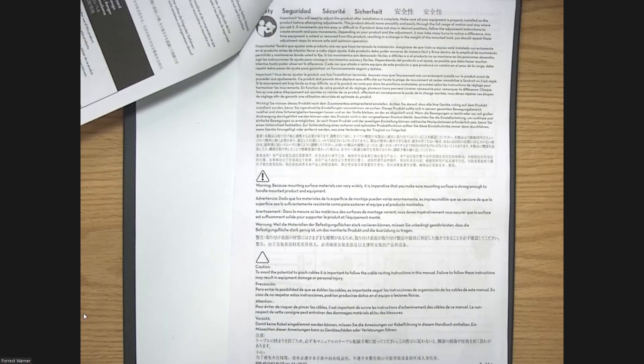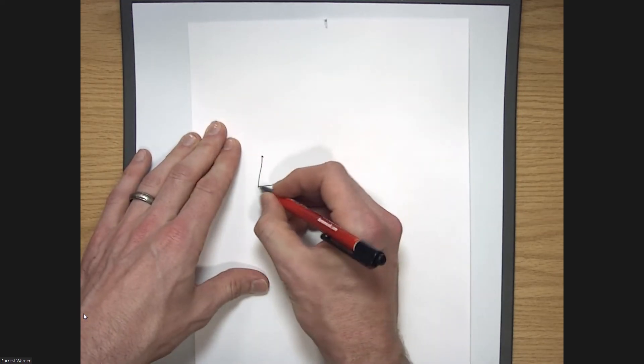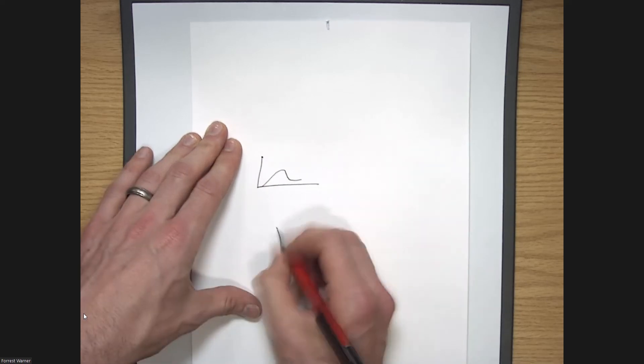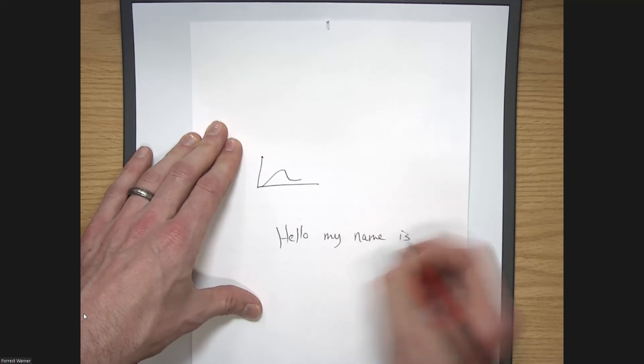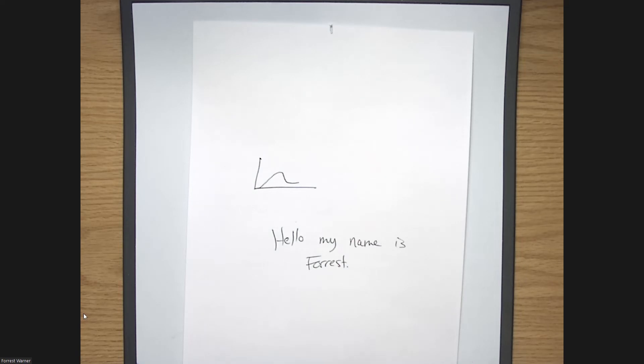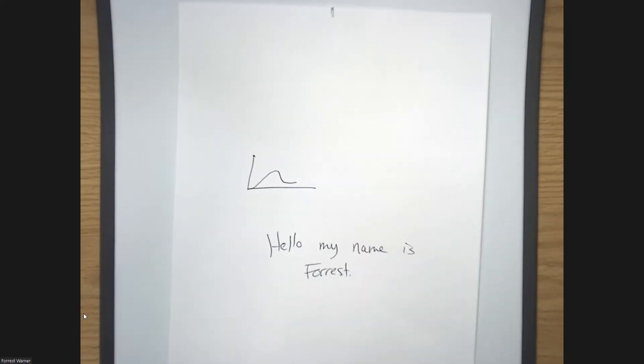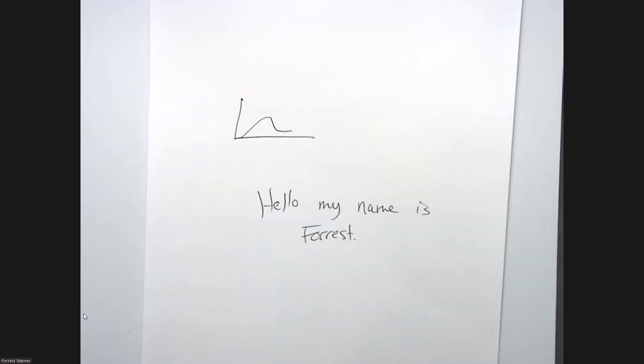If you would prefer to take notes on the document camera, you can take a piece of paper. You can draw graphs. Here's a little bell graph. Again, hello, my name is Forrest. And that shows up. Same thing here is if for whatever reason your writing is small or what you're showing is small, you can zoom in a little bit. The camera on the document camera is easily movable.